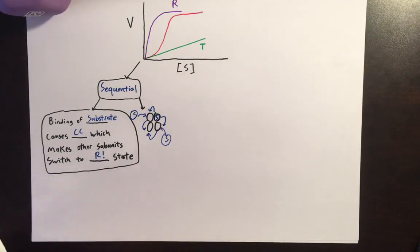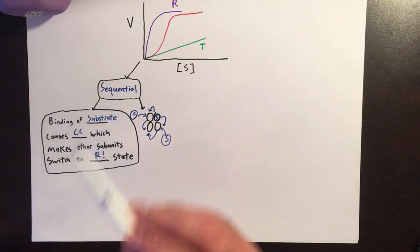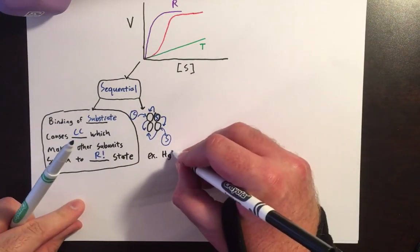It's not an enzyme, but hemoglobin is a really good representation of the sequential model. For example, it would be hemoglobin.